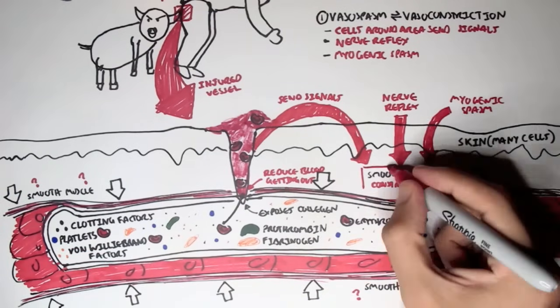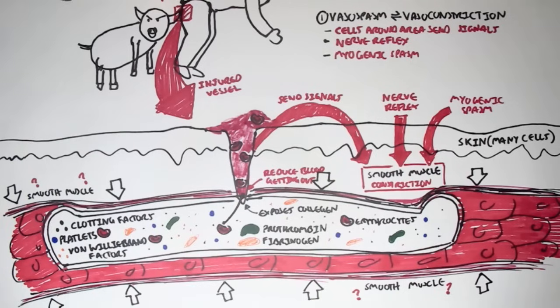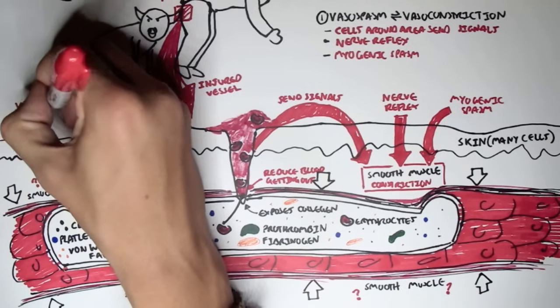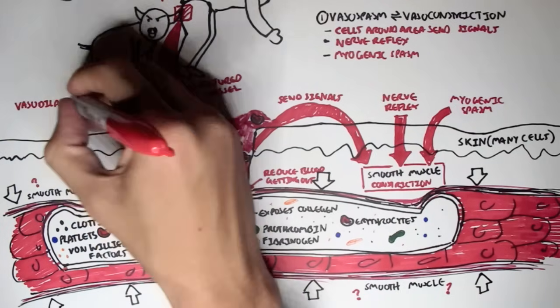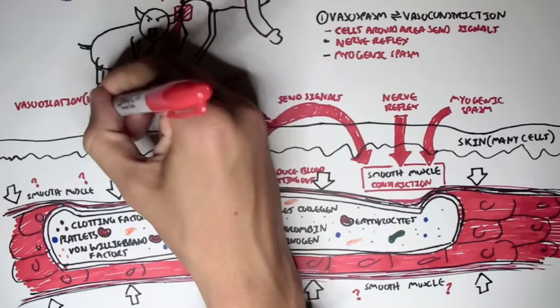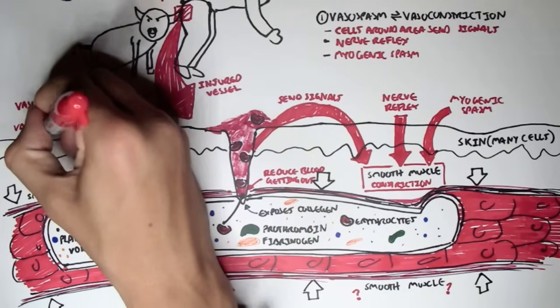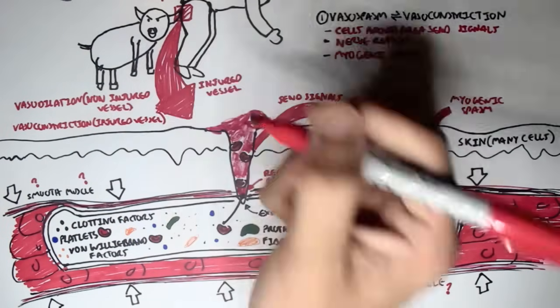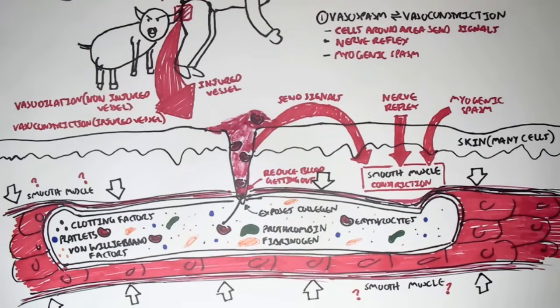So all these three ways enhance vasoconstriction to reduce blood flow. Now you might have heard me say vasodilation in my immunology videos. But vasodilation tends to occur to non-injured vessels, so that we can have more white blood cells going to the infiltrated area where the pathogen is. Vasoconstriction occurs to injured blood vessels to reduce blood flow.